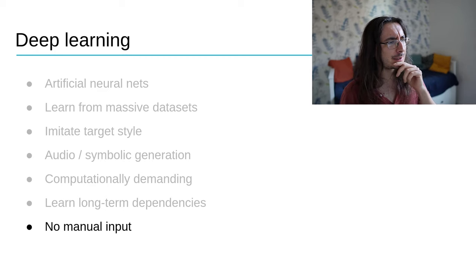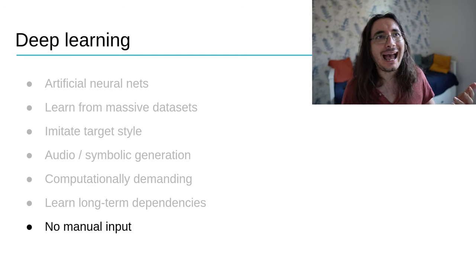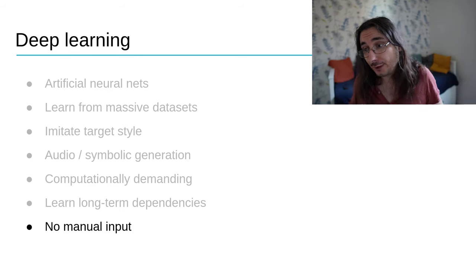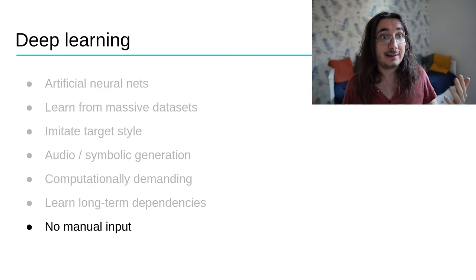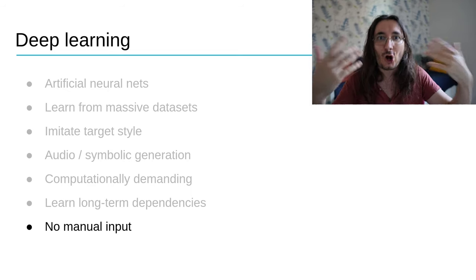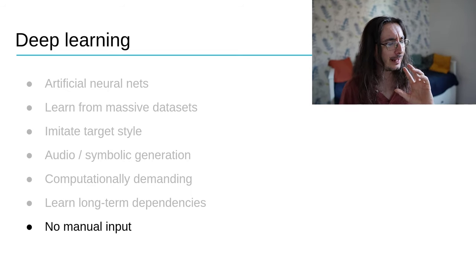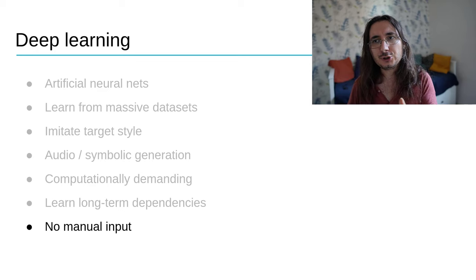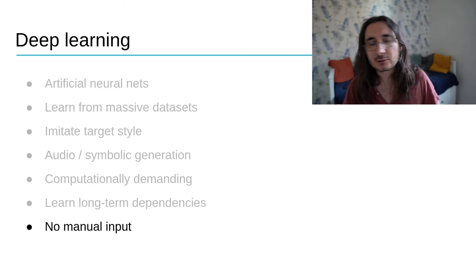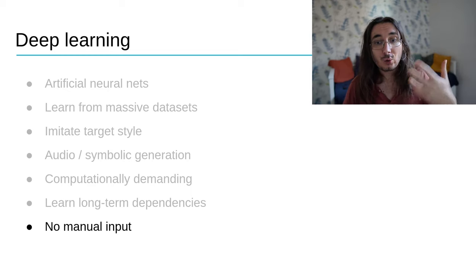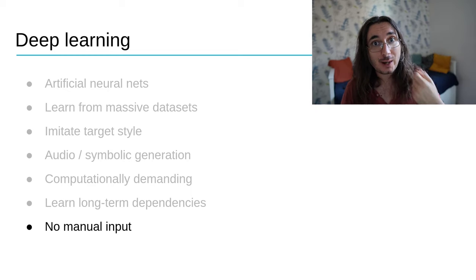A point very peculiar to deep learning is that you need almost no manual input. The models are able to extract all the information they need directly from the data. This means you don't need to teach the model about key, time signature, scales, or pitch — all of that information is extracted automatically by the model itself.